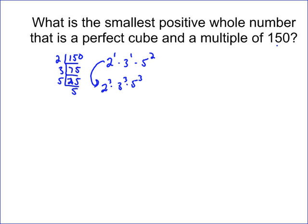So the answer is 8 times 27 times 125, which gives you 27,000. If you wanted to know the cube root of 27,000, it turns out to be 2 times 3 times 5, which is 30. So 30 is the cube root of 27,000, showing it's a perfect cube.